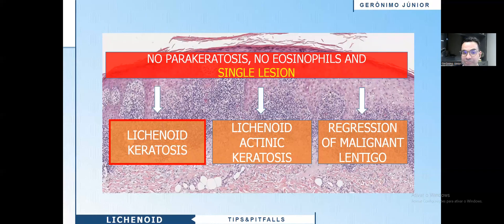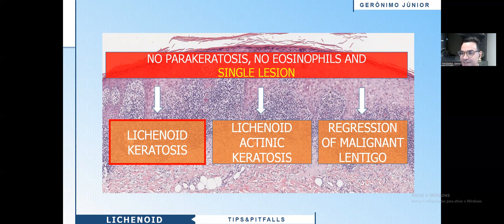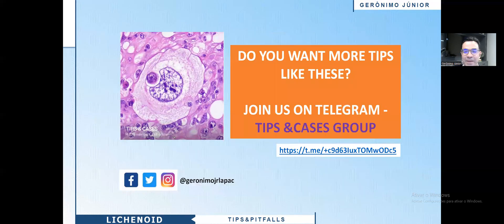So if you have no parakeratosis, no eosinophils, but it is a single lesion, you need to think about lichenoid keratosis, lichenoid actinic keratosis, and regression of lentigo maligna. If you want more tips like this, join us on Telegram. Our group is Tips and Cases. See you in the next video.